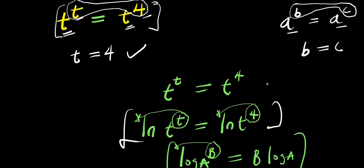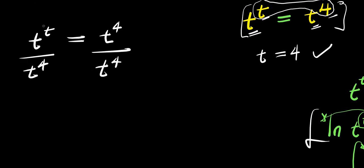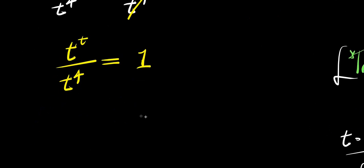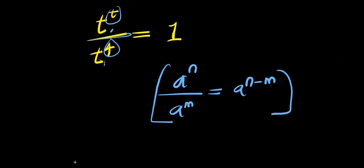Now this is one way of solving the whole problem. You can also solve it using a very different method without all these steps. We have t power t equals t power 4. You can divide each side by t to the power of 4. The t power 4 on the right cancels, and you have t power t divided by t power 4 equals 1. Using the identity a to the power of n divided by a to the power of m equals a to the power of n minus m, you get t to the power of t minus 4 equals 1.